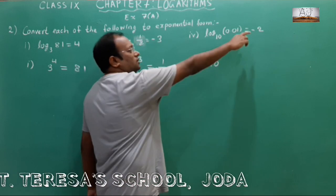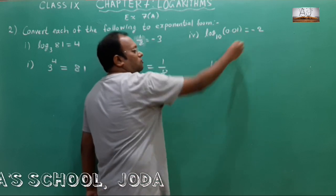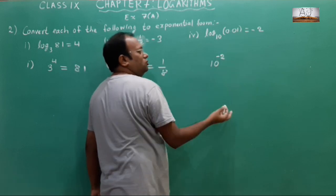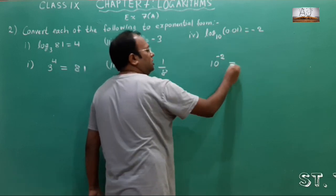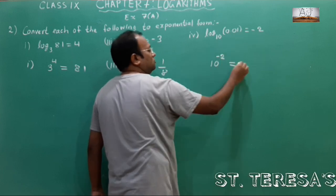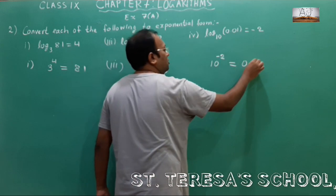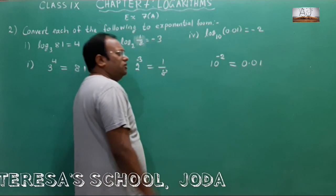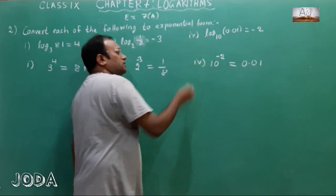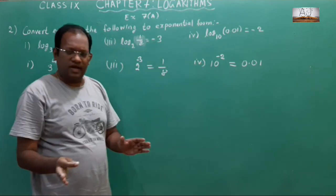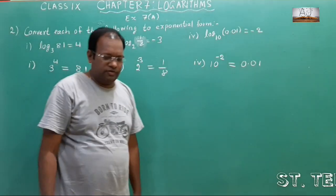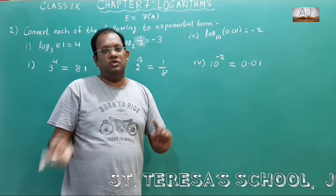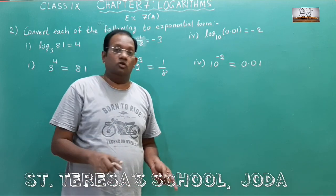The base is 10. Whatever is given becomes the power — 10 to the power minus 2 equals whatever log value we have found. This is how we do it. There are 4 bits; the rest you can try yourself. Practice it and you will get it. Log to exponential, exponential to log — it is very important.